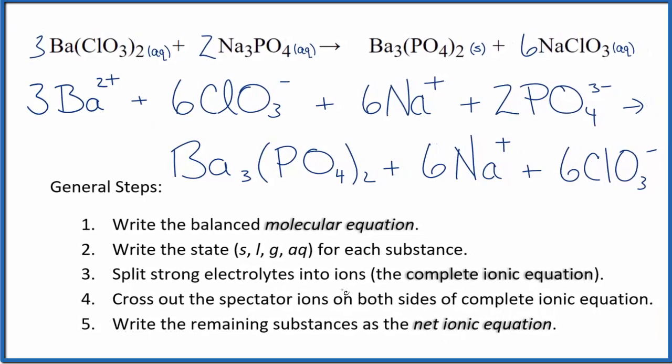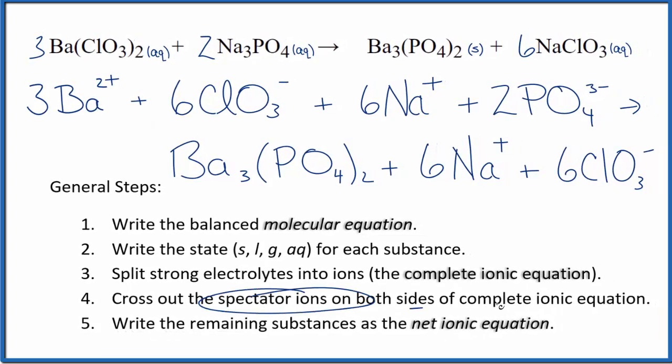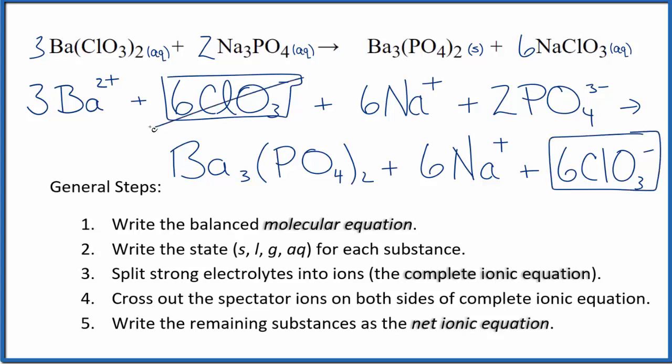So now we can cross out the spectator ions. They're on both sides of our complete ionic equation. In the reactants, I see six of these chlorate ions right here and in the products. So these are spectator ions. They haven't changed, just cross them out. Six sodium ions in the reactants and in the products, spectator ions.